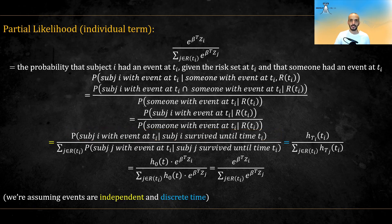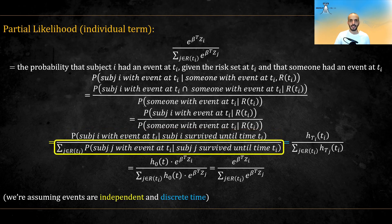Likewise, for the denominator, we can write someone with event as the sum over the individual probabilities. This again makes use of the independence property, where the probability of a union is equal to the sum of probabilities.